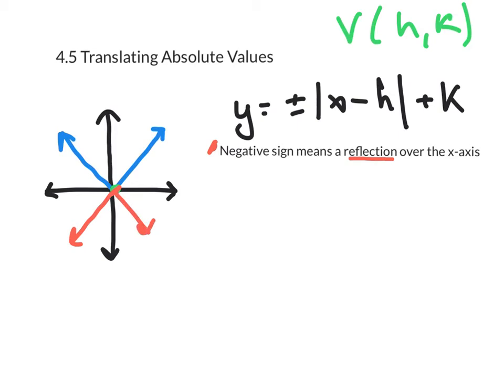The second part is going to deal with a horizontal shift to the left or right, and that is located right here. The absolute value of x minus h is a horizontal shift to the left or right h units. And this one is going to cause some of you a few problems because it is counterintuitive.